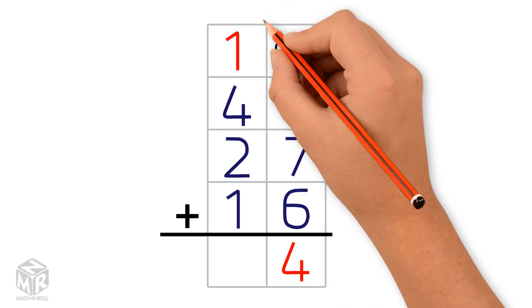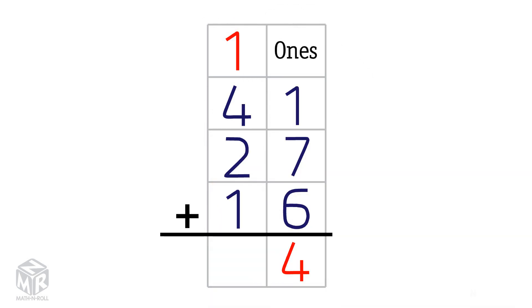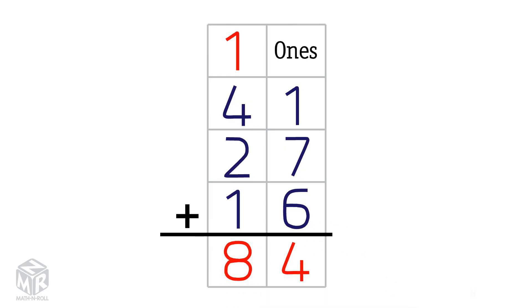Now we add the tens. 1 plus 4 plus 2 plus 1 equals 8. So 41 plus 27 plus 16 equals 84.